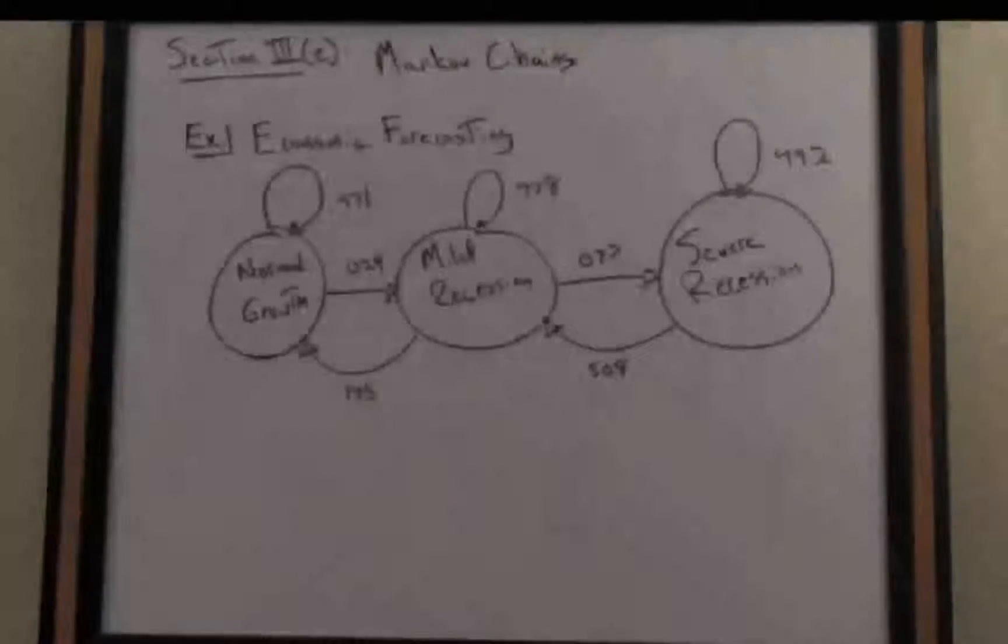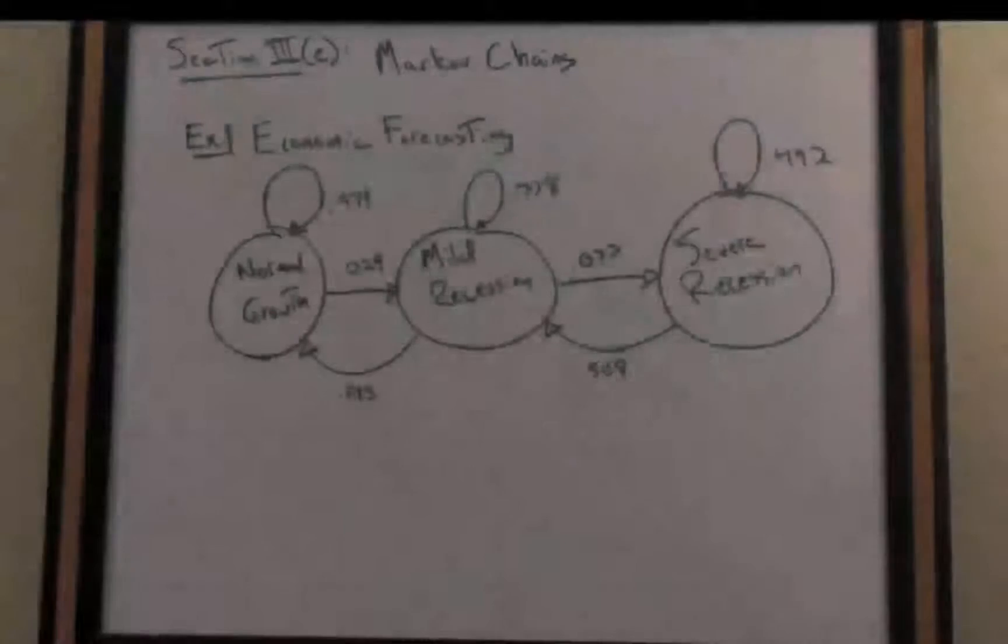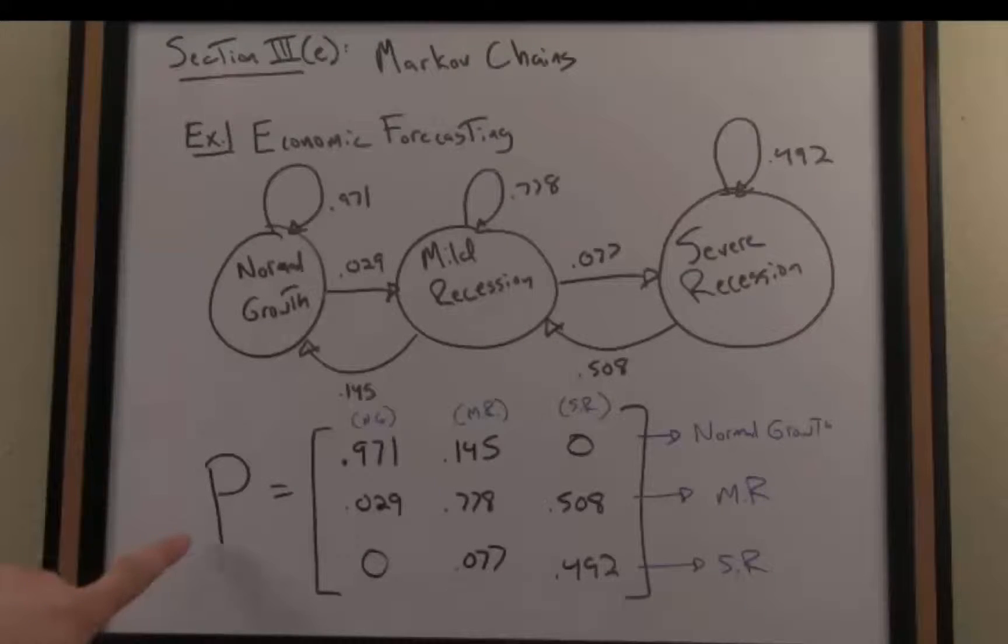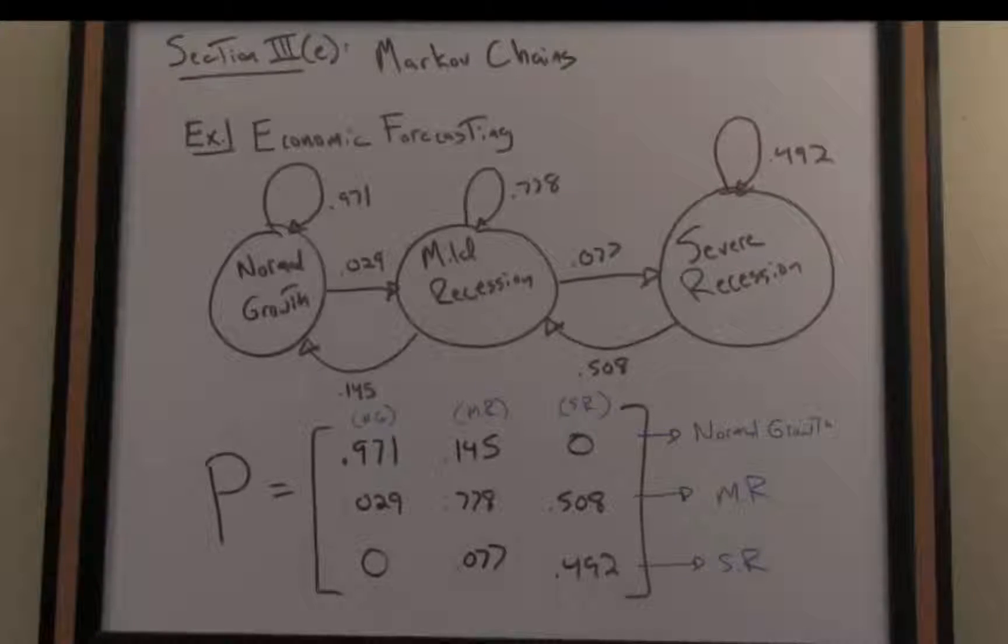Now based on this directed graph, what I'd like to do is define my stochastic matrix P for this Markov chain and then given some initial state of our economy we can make a prediction, in other words forecast about our economic future. So here then we have the associated stochastic matrix, we'll call it P, that once again reflects the transitional probabilities as shown in our directed graph above.